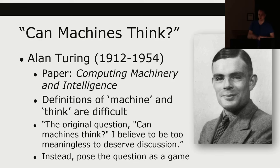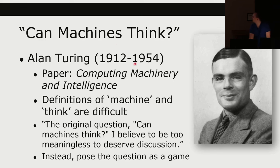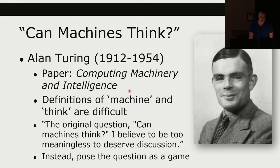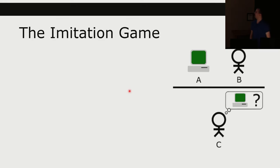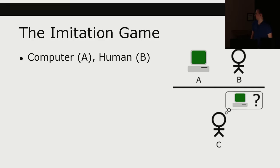Who knows where we could be now — one of the most important thinkers of the 20th century. What Alan Turing said in his paper Computing Machinery and Intelligence, written in the 1940s before computers: the definitions of 'machine' and 'think' are difficult, and the original question of whether machines can think is too meaningless to deserve discussion. Instead, let's pose the question as a game — the Imitation Game.